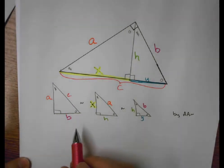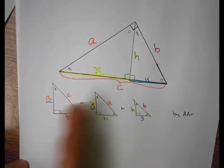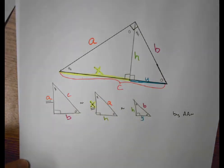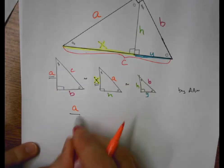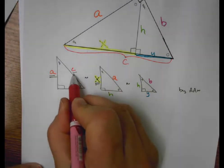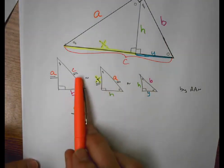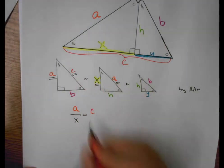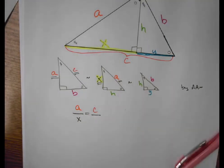So, for example, I could say that A is to X—they're both on the left-hand side, they're in corresponding locations for these two triangles. So A is to X as—and then I need to pick another pair of sides. Well, maybe I could say C and A because those are the same two triangles and those are in corresponding locations. So I could say A is to X as C is to A.